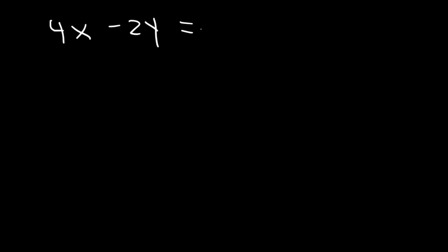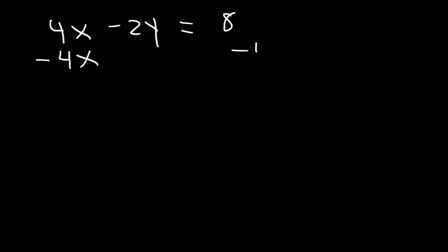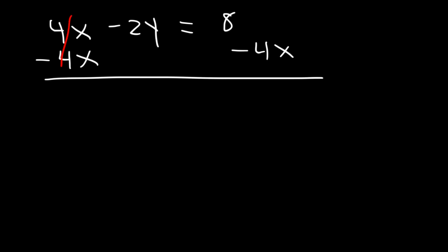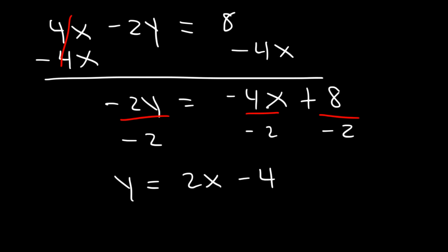Sometimes you might be given an equation in standard form. What is the slope of the line? We need to get y by itself — put it in slope-intercept form. First, move the 4x from the left to the right by subtracting 4x from both sides. So negative 2y equals negative 4x plus 8. Now divide every term by negative 2 to get y by itself. y equals negative 4 divided by negative 2, which is positive 2, times x, plus 8 divided by negative 2, which is negative 4. So the slope is 2.